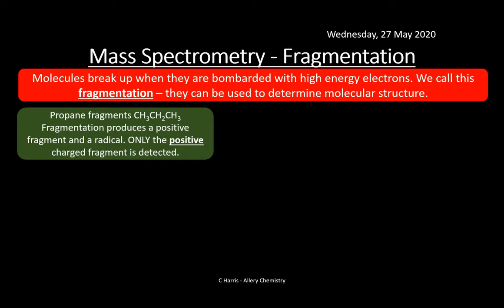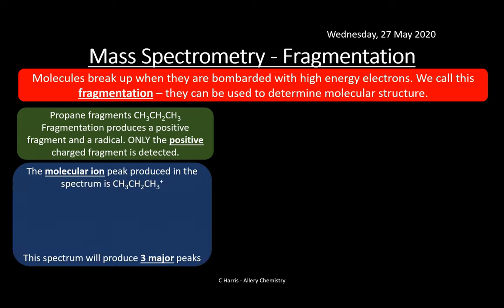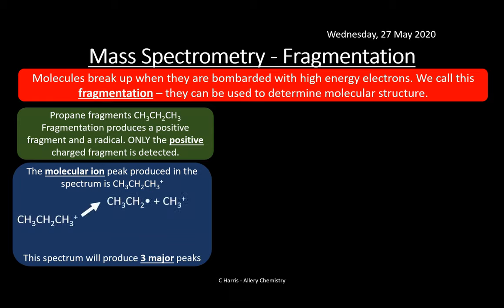Let's look at propane fragmentation. Propane has three carbons. Fragmentation produces a positive fragment and a radical; only the positively charged fragment is detected in the mass spectrometer. The molecular ion peak is the M plus peak. This spectrum produces three major peaks: the CH3-CH2-CH2 plus at mass 44, CH3-CH2 plus at mass 29, and CH3 plus at mass 15.